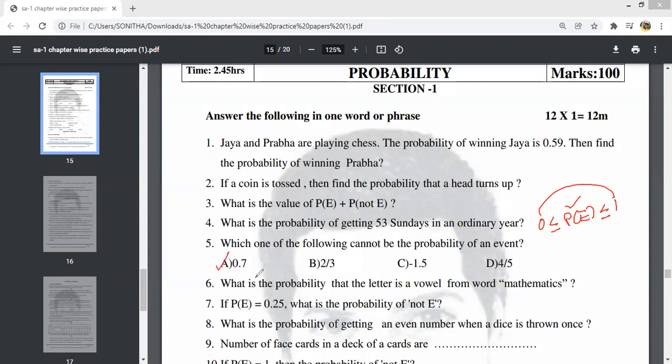The probability is 0.7, or 2 by 3 which are proper fractions. Option C is 1.5, which cannot be a probability because it exceeds 1. So option C is the right answer.